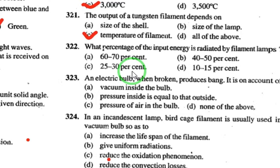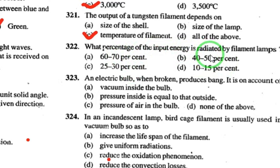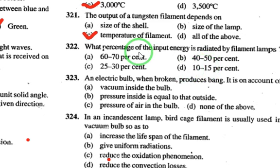Filament lamps generally have very low efficiency. Only 10 to 15 percent of the input energy is radiated from the filament lamp, so the answer is 10–15%.